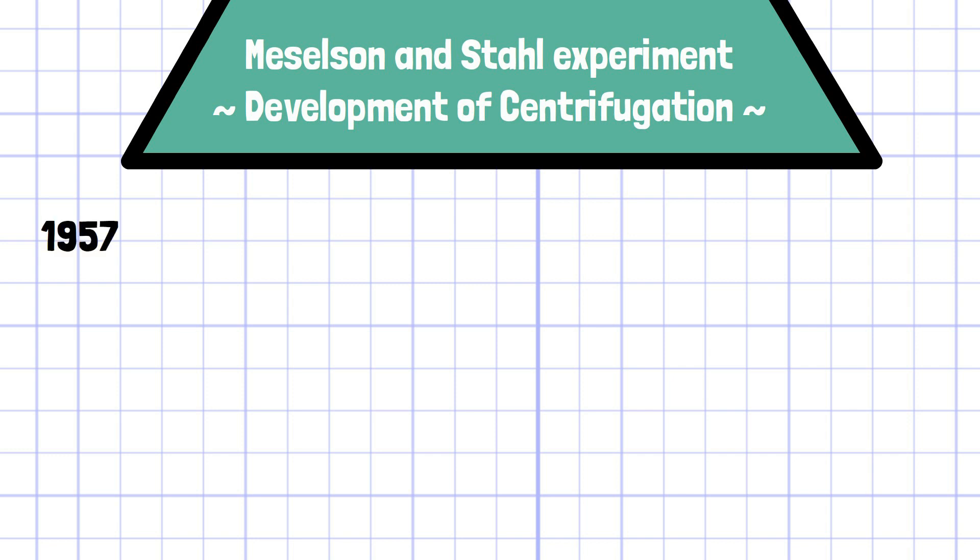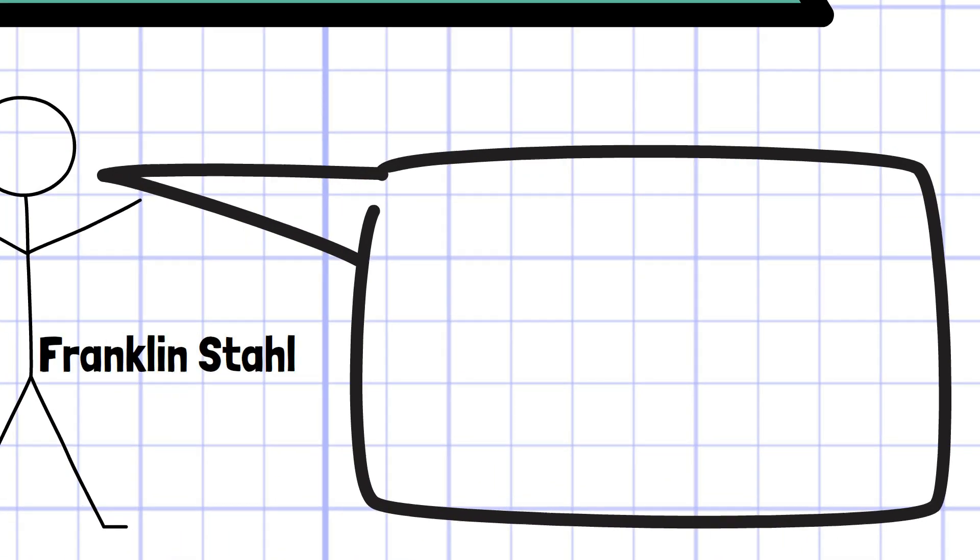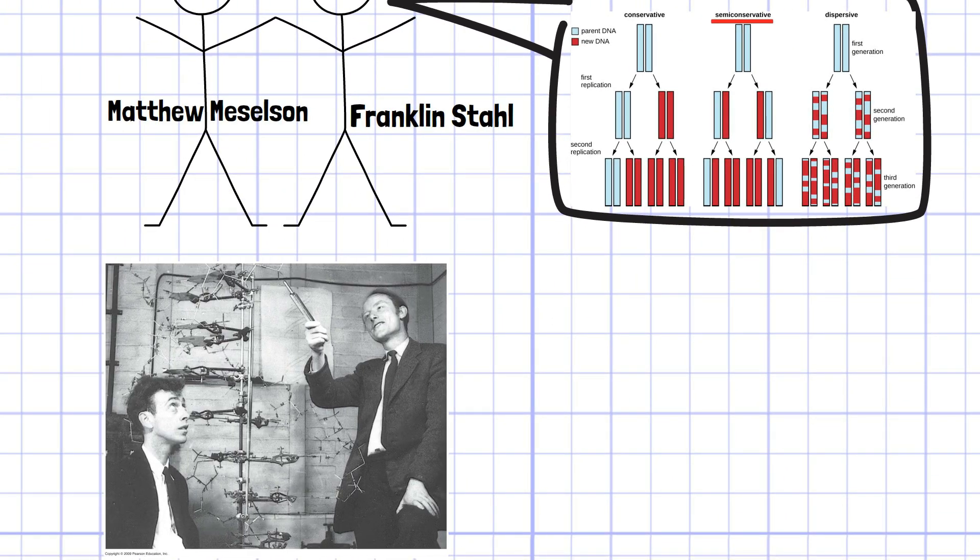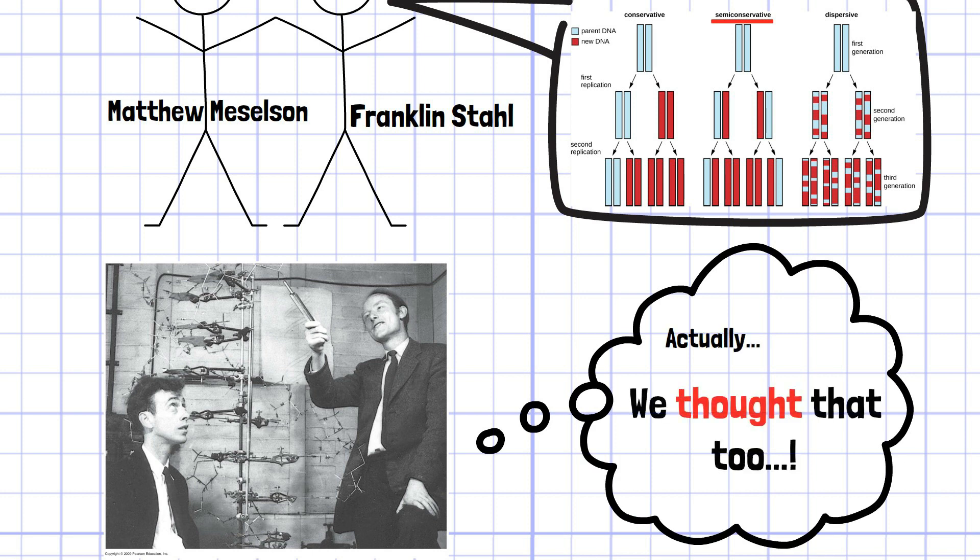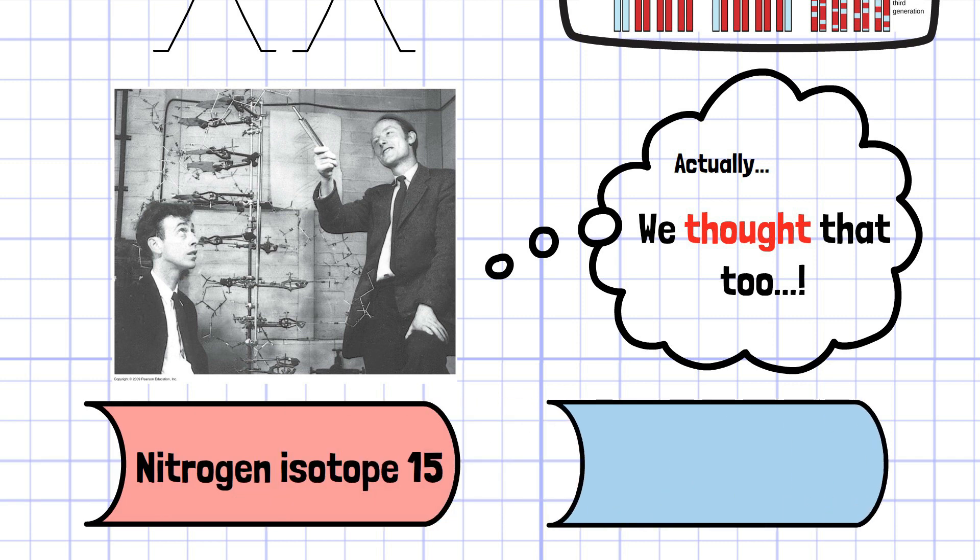In 1957, American biologists Matthew Meselson and Franklin Stahl conducted an experiment that proved a semi-conservative replication pattern of DNA double helix, which was originally proposed by Watson and Crick by applying two new techniques: the nitrogen isotope 15 and cesium chloride centrifugation method. In this video, cesium chloride gradient centrifugation will be explained.